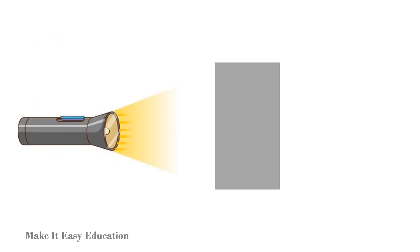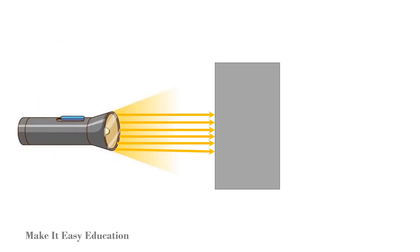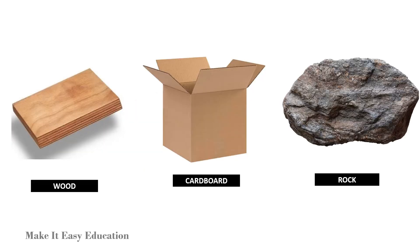Some materials do not allow light to pass through them at all; such material is said to be opaque. Wood, cardboard, and rock are examples of opaque material. We cannot see at all through these objects.